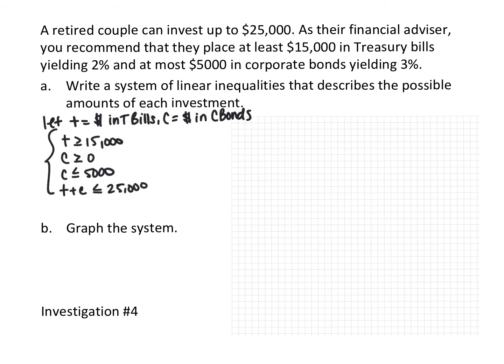Always make sure you define your variables. Let T be the money in treasury bills and C be the money in corporate bonds. T must be greater than or equal to $15,000. C must be greater than or equal to zero because we can't have negative money, but it must be less than or equal to $5,000. And T plus C, the total money they're investing, must be less than or equal to $25,000.